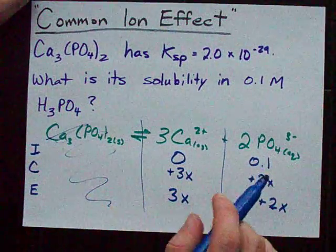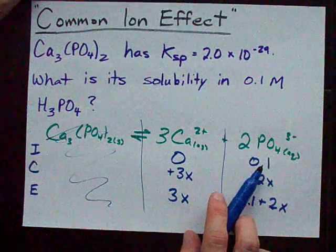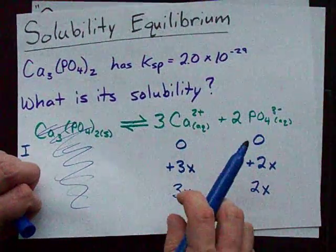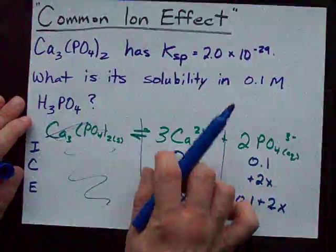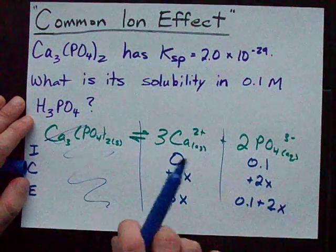Notice how that's different from if you had assumed this was zero to start with. If you're using pure water with no phosphate already inside, your chart would look like this. But yours doesn't. Yours looks like this, because you already have an ion in the solution that plays a role in equilibrium.